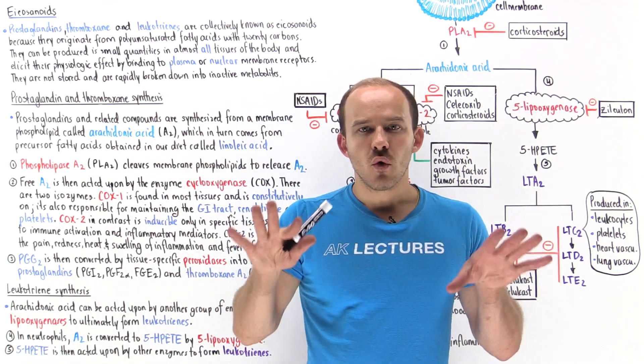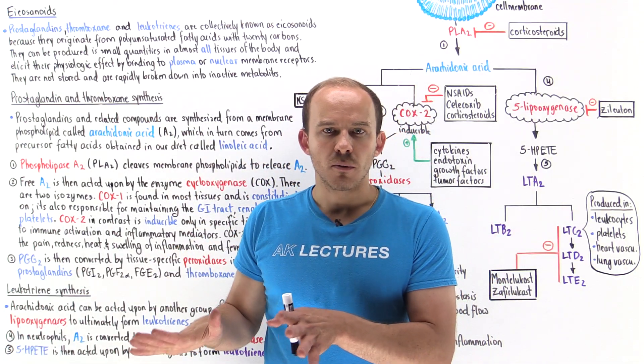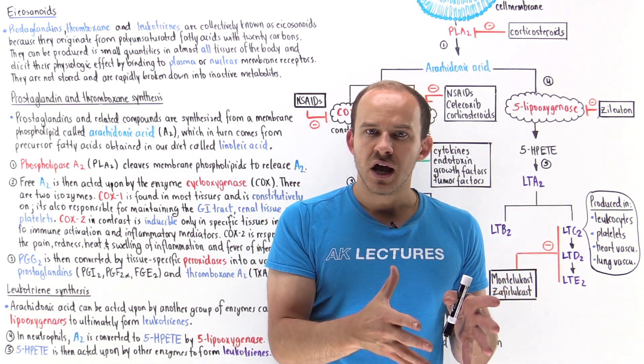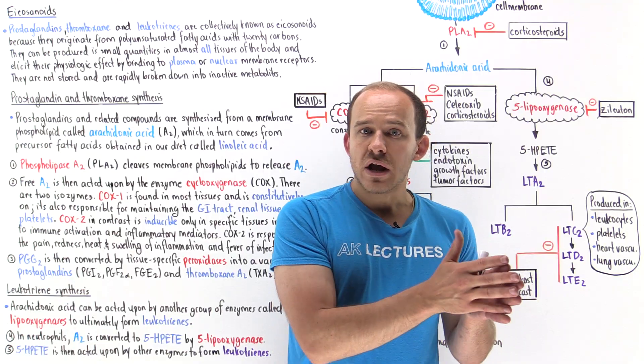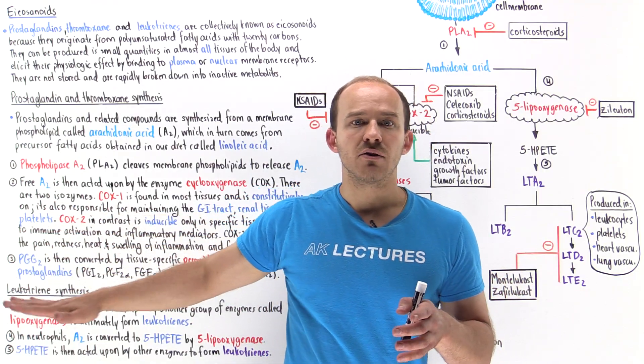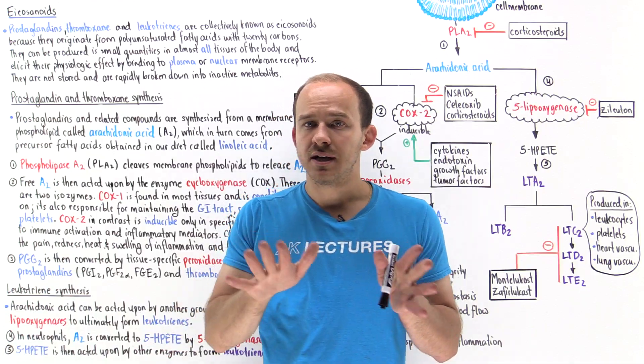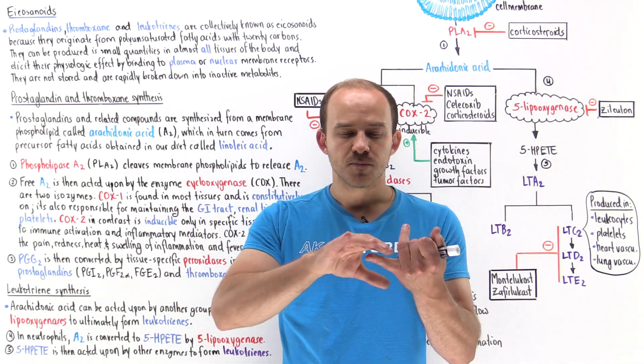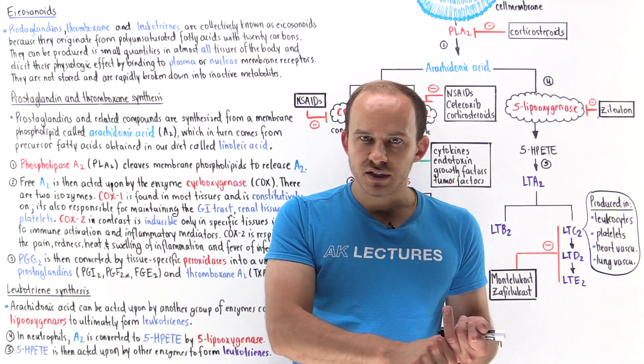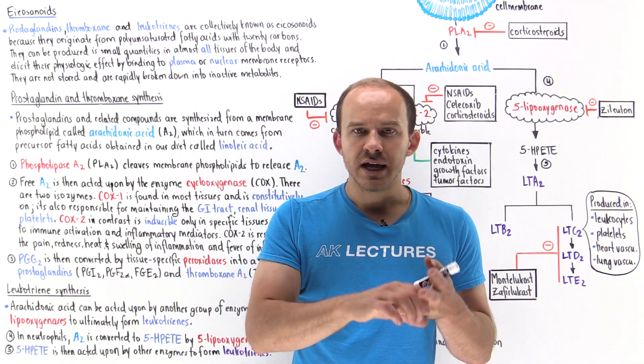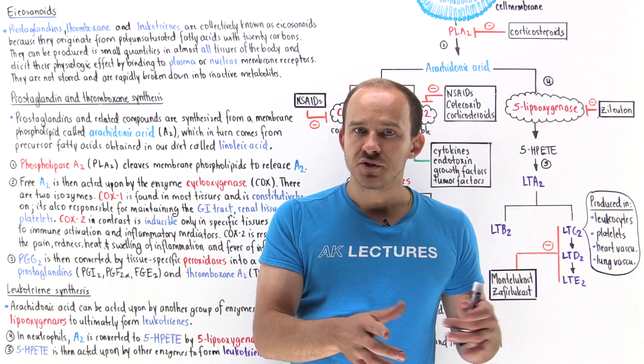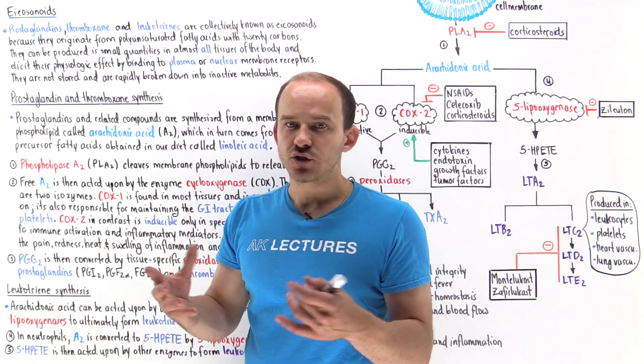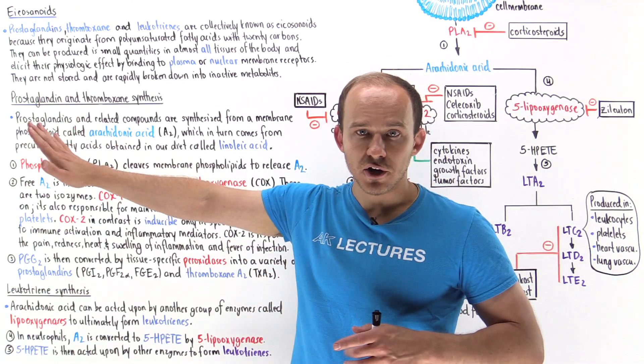Eicosanoids are not hormones. Remember, hormones are produced in glands, stored in glands for long periods of time, and when released they travel very far distances to carry out their physiologic effect. In contrast, eicosanoids are local mediated molecules. They're synthesized by individual cells, used very quickly and then destroyed quickly by those cells, and they act locally around the cell that synthesized them. They don't travel very far distances.